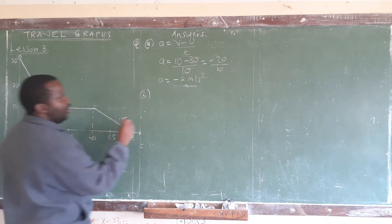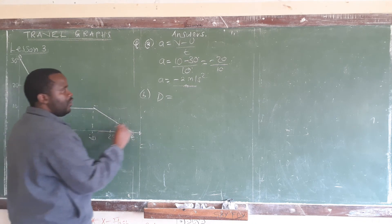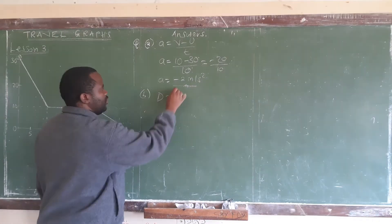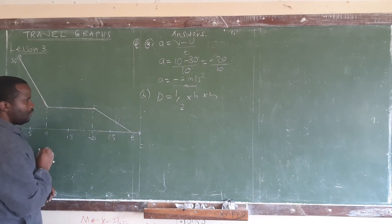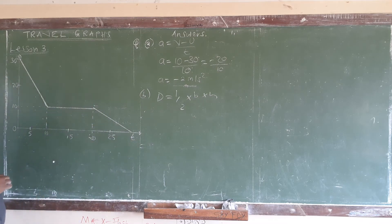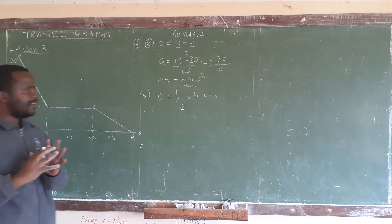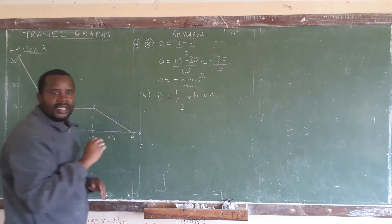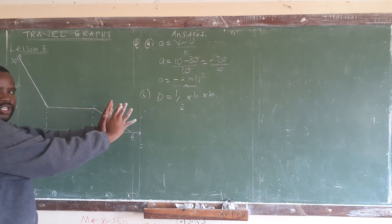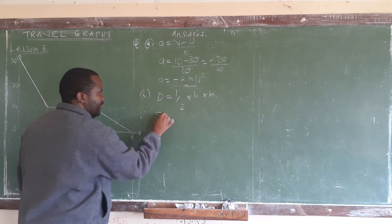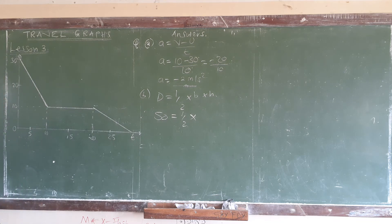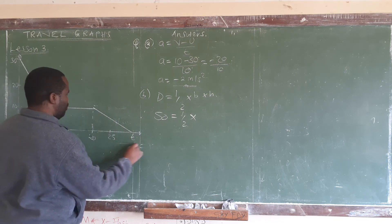From our first video we said the area of a triangle is half times base times height, and that gives us the distance traveled. So we are going to do substitution. From here up to a certain point is our base, and the height is a vertical measurement. We set distance equal to half times base times height and substitute carefully.